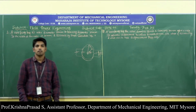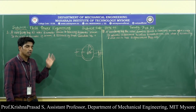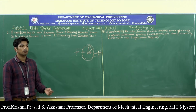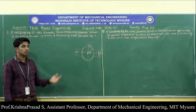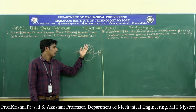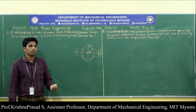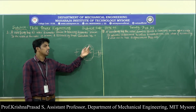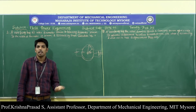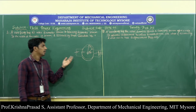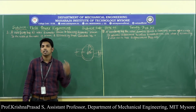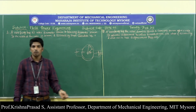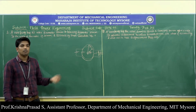Next, we cover numericals on the vane pump. The key parameter is the volumetric displacement of the vane pump, which requires considering the cam ring, rotor, and vane width. L is the width of the vane, DC is the diameter of the cam ring, and DR is the diameter of the rotor. Importantly, the axis of the rotor and the axis of the cam ring are not the same — there is some eccentricity in the vane pump.